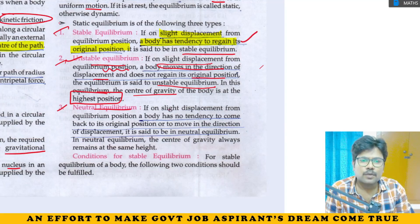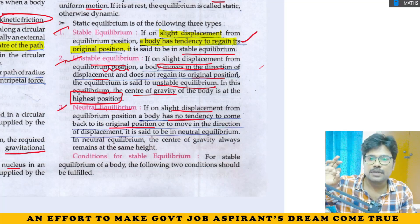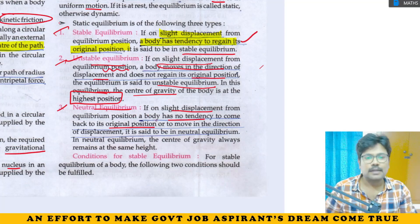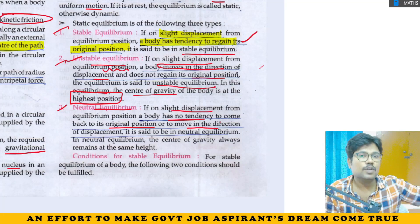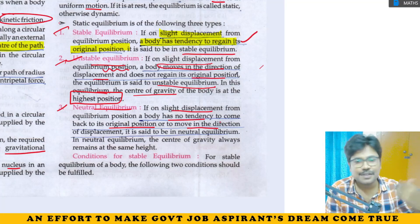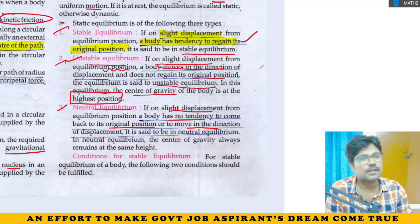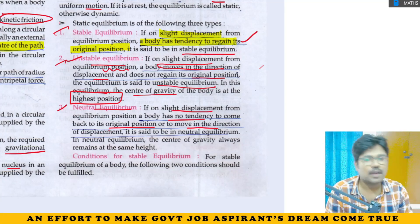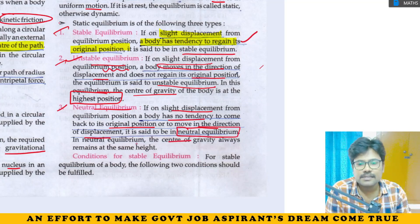Neutral equilibrium: when a body is slightly displaced, it has no tendency to come back to its original position, nor does it move further in the direction of displacement. The body remains in its new displaced position. Center of gravity remains at the same height in neutral equilibrium.